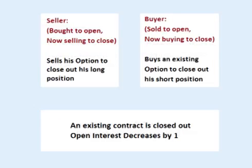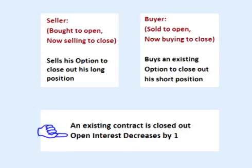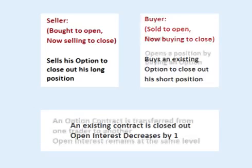Open Interest decreases when a contract is closed out. If the buyer sells the option he is holding to a writer buying back his short position, it closes out an option contract. Therefore, Open Interest for that strike price decreases by one.